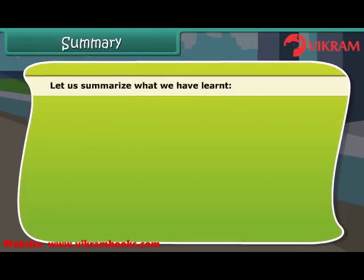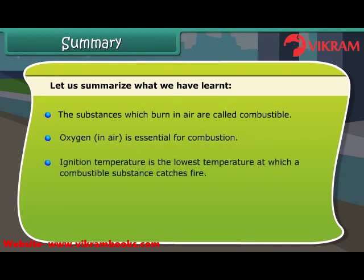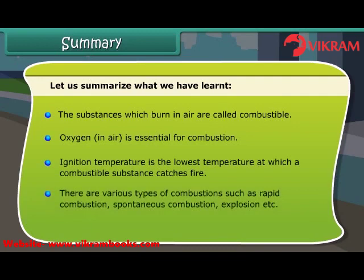Let us summarize what we have learned. The substances which burn in air are called combustible. Oxygen in air is essential for combustion. Ignition temperature is the lowest temperature at which a combustible substance catches fire. There are various types of combustion such as rapid combustion, spontaneous combustion, explosion, etc.